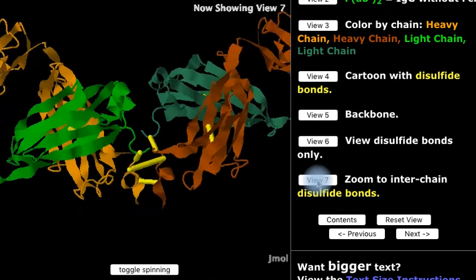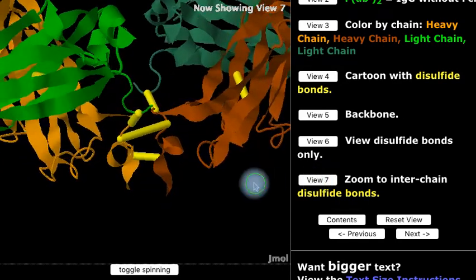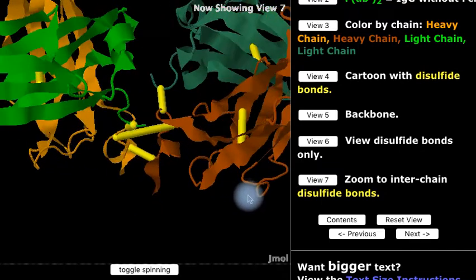Here we see the inter-chain disulfide bonds, the ones between chains, in some detail.